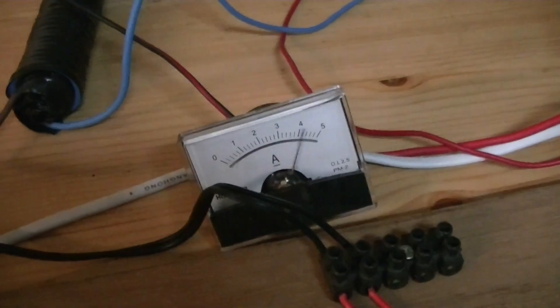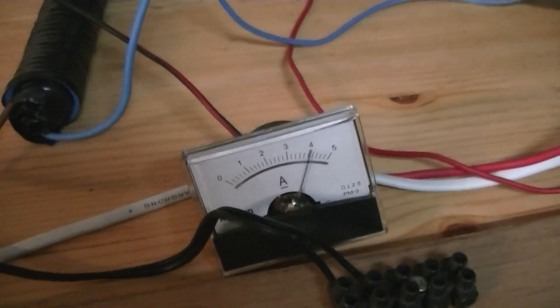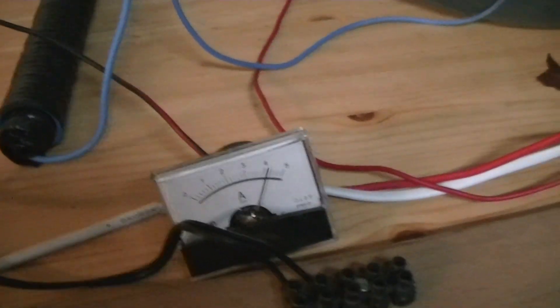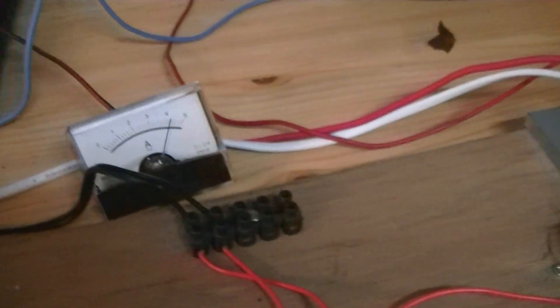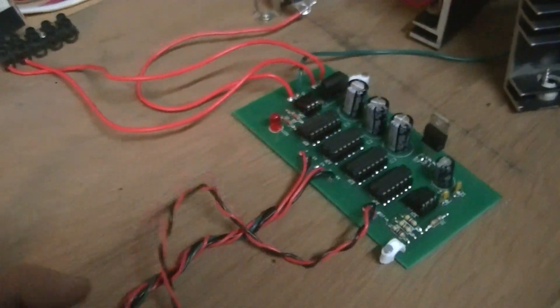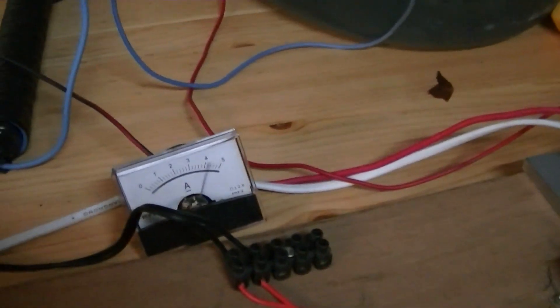For some reason it's fluctuating at 4 amps. I haven't got a clue why it's doing that. Messing around with the knobs. See here, all sorts of readings.